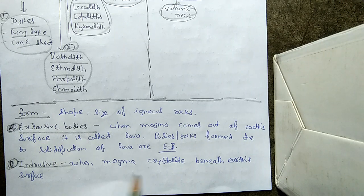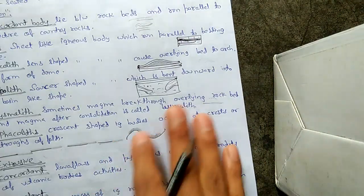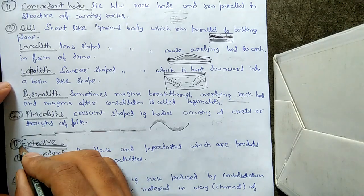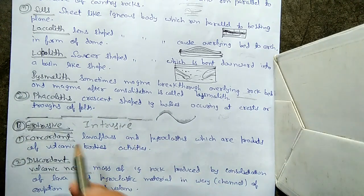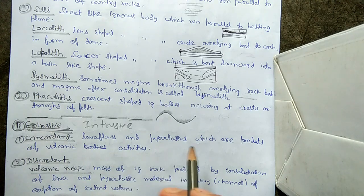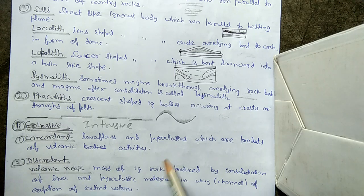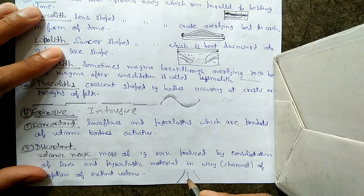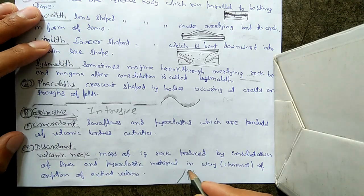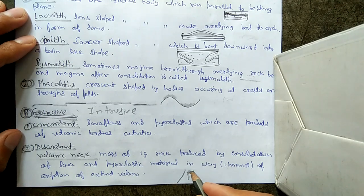Now the second portion is intrusive bodies. When magma crystallizes beneath the earth's surface, the bodies are called intrusive bodies. In concordant intrusive bodies, lava flows and pyroclasts — materials that come out of a volcano — are products of volcanic activity. In discordant intrusive bodies, volcanic neck is the mass of igneous rock produced by consolidation of lava and pyroclastic material in the channel of eruption of an extinct volcano. The consolidation occurring in the volcanic channel produces what is called a volcanic neck.